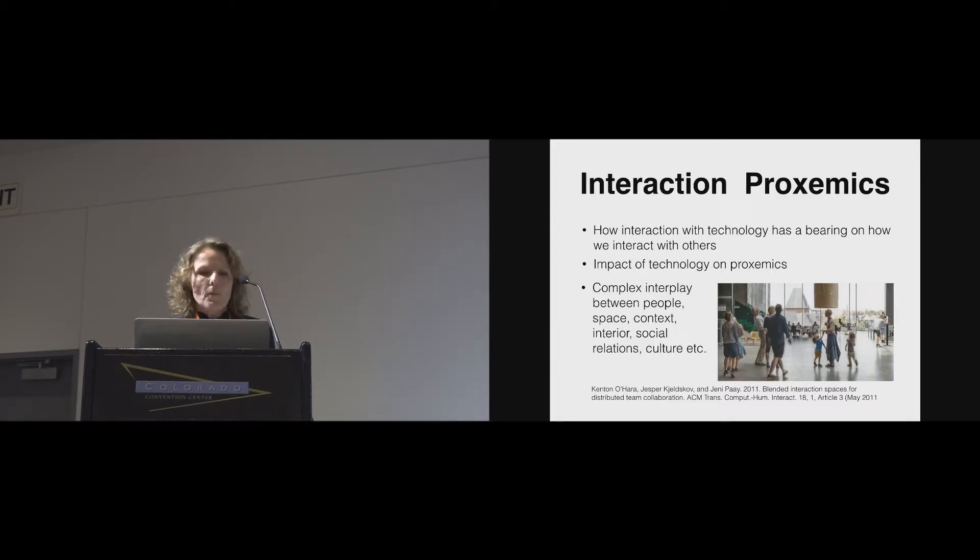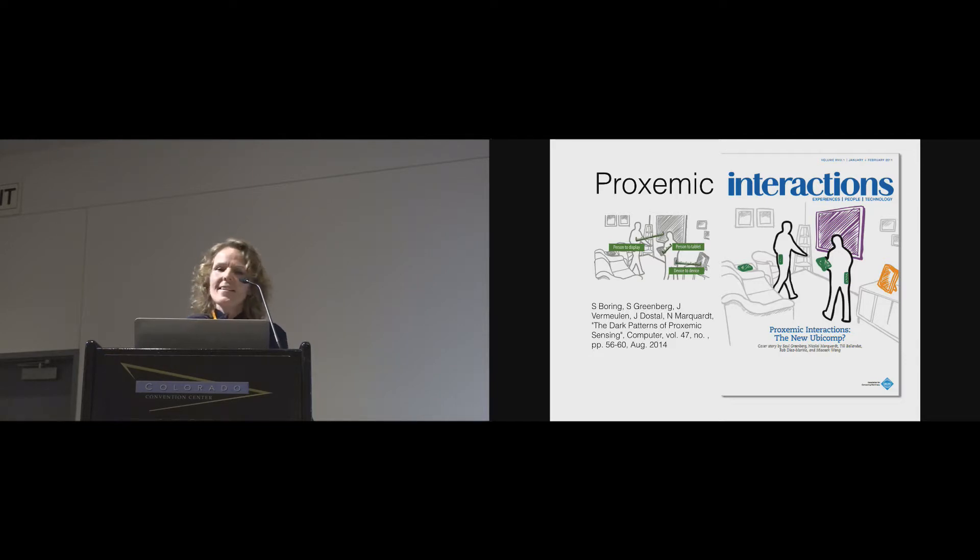So, interaction proxemics we propose as a complementary perspective to some of the work on proxemic interaction that's been going on in the field. And this is not entirely new. It also builds on work by Kenton O'Hara and Jesper Kelsko and Jenny Pei and other people's work in this area. But, particularly, we want to emphasize interaction proxemics is about how the interaction of technology has a bearing on how we interact with others. And it's about the impact of the technology on how we can configure ourselves. And always how this act out is always a complex interplay. So, it's not like a predictive model. So, this is a technology and then this is a distance that people will use to configure each other. So, it's a complex interplay between people, space, context, interior, social relations, and culture.